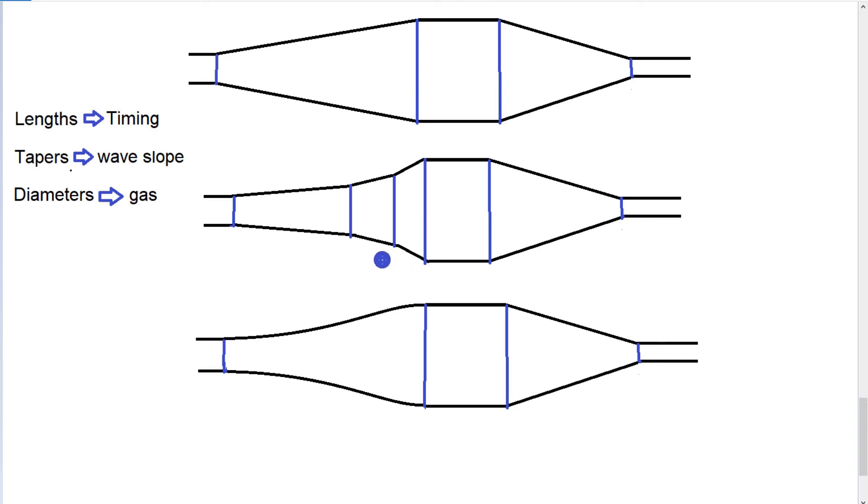So that's how you can tell simply by looking at the pipe tapers to determine what the characteristics of the pipe are going to be, basically.